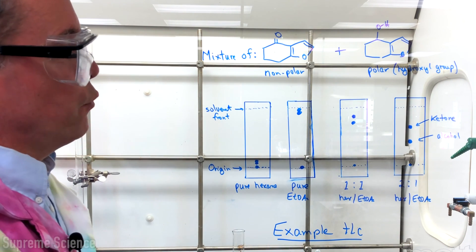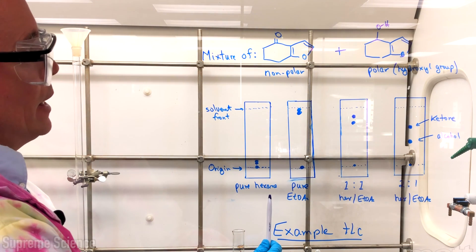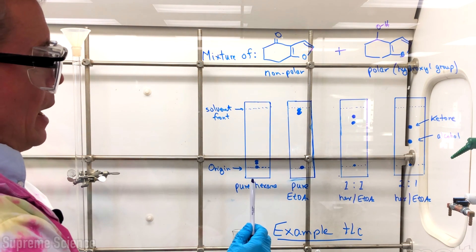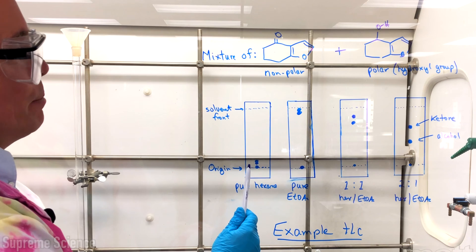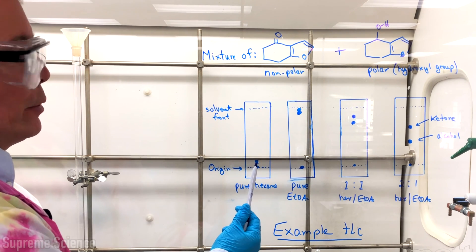So we ran four hypothetical TLCs. The first one we ran in pure hexane, this mixture of compounds, and hexane being non-polar does not push the material up the TLC plate very far so both spots appear at the bottom. This is unsatisfactory.